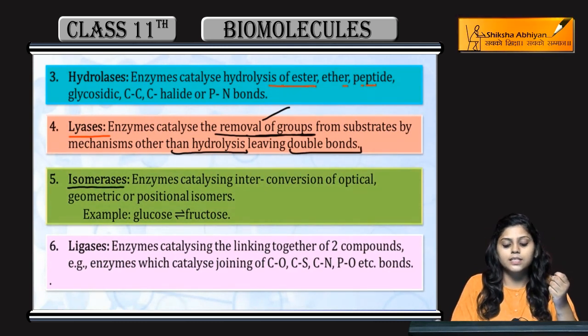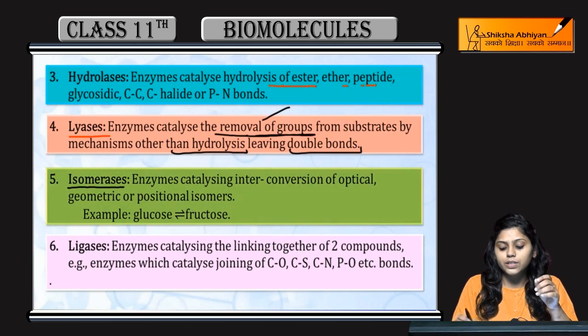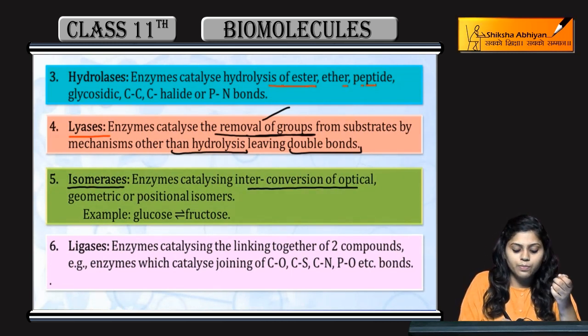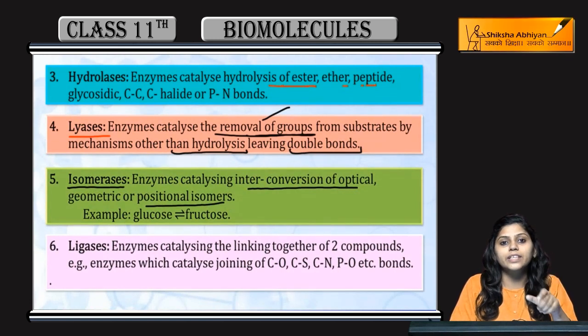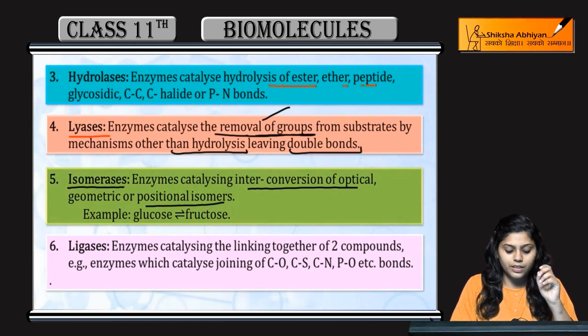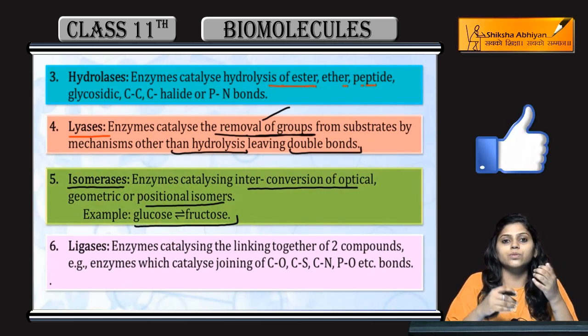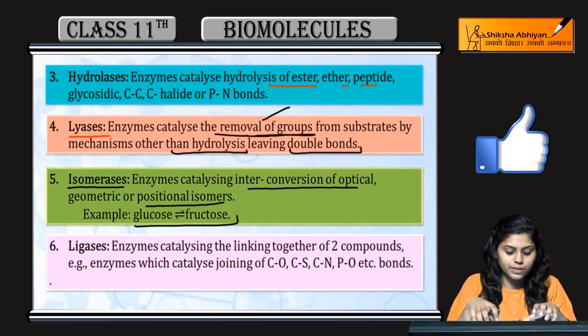Next is Isomerases. Interconversion of optical or geometrical or positional isomers - who carries this out? Isomerases. For example, glucose converting to fructose and fructose converting to glucose. These both are isomers.